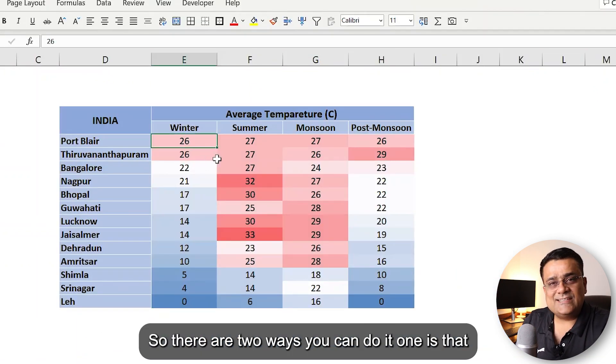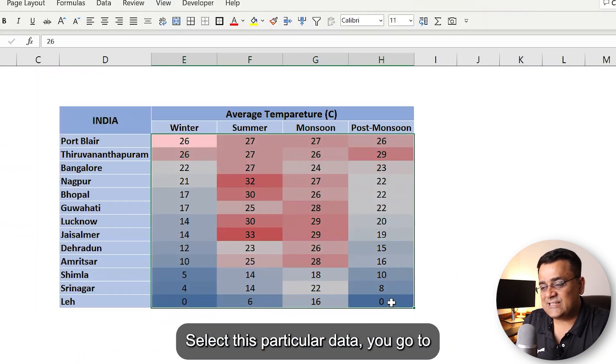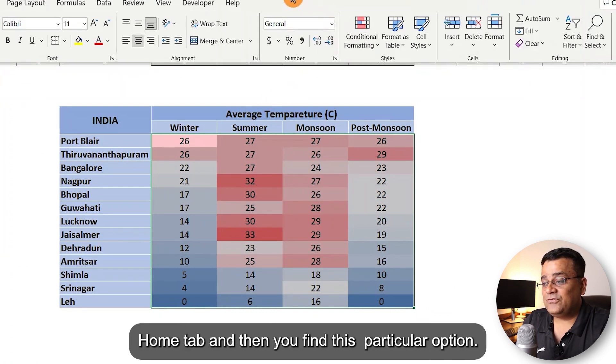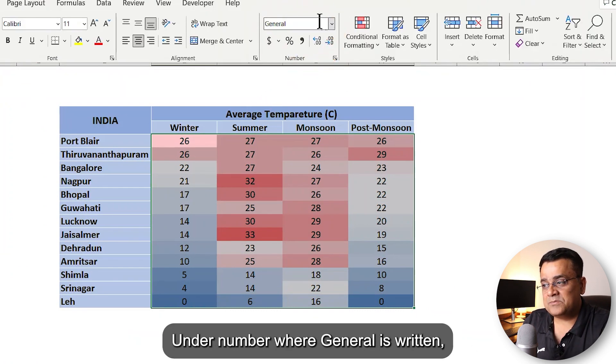So there are two ways you can do it. One is that you select this particular data, you go to Home tab, and then you find this particular option under number where 'general' is written. Just click on the dropdown and click on 'more number formats.'